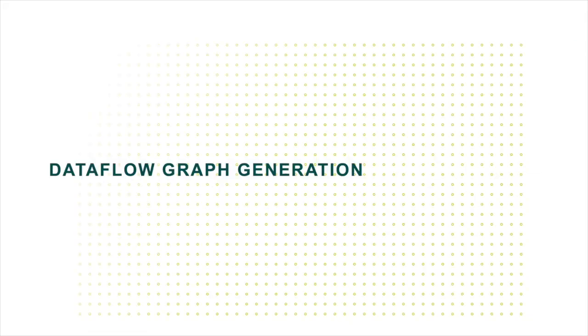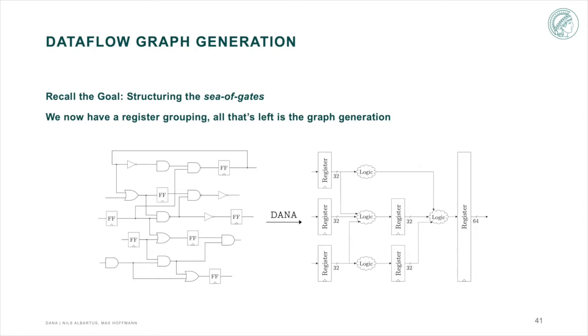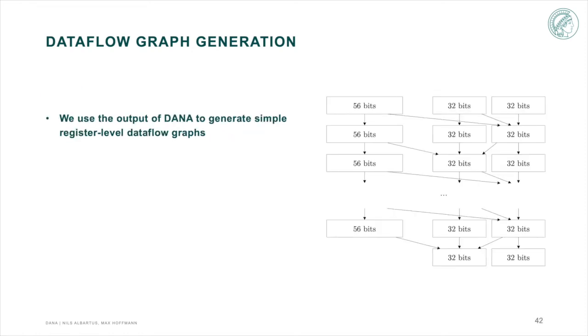The output of DANA can now easily be used to generate data flow graphs. Remember that we wanted to structure the sea of gates. Since this is now done due to the recovery of high-level registers by DANA, we can now take care of the graph generation. In the data flow graph on the right, the arrows indicate data flow, which in the netlist itself is implemented in the logic, meaning there exists a way to get from one register to another through combinational gates. All boxes represent registers of a specific size that were recovered by DANA.